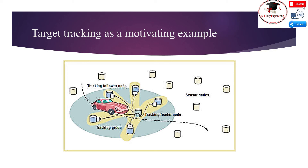Where delta is the communication delay, the process of sensing, estimation, and leader selection repeats. The figure shows collaborative processing in a leader-based object tracking scenario. As the vehicle moves through a sensor field, nearby sensors detect it. An elected node aggregates data from active sensors and migrates the information from node to node as the vehicle moves. The sensor nodes collaborate primarily to improve sensing accuracy, and acceptable estimation quality might be achieved using only a subset of sensors.